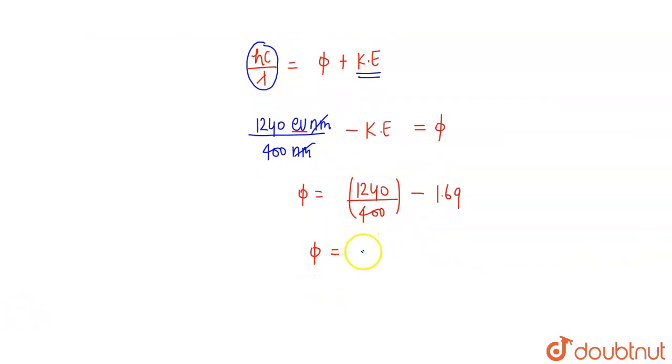This is the work function of the metal surface. The value is 3.1 minus 1.69, which equals 1.41 electron volts.